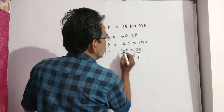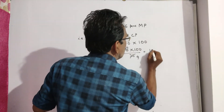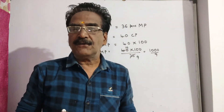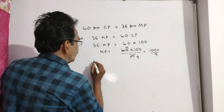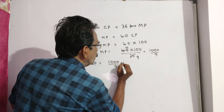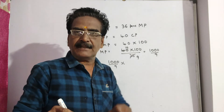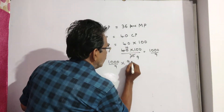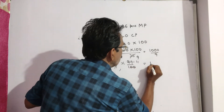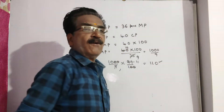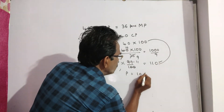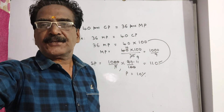That gives 1000 by 9. Now he is offering a discount of 1%, so the selling price will be market price into 99 by 100. So the selling price of each pen will be 110, cost price 100, sold price 110, profit is equal to 10%. Okay friends, thank you. Have a nice day.